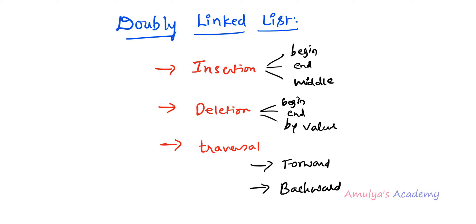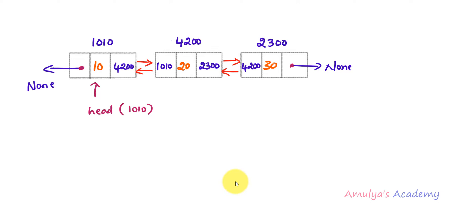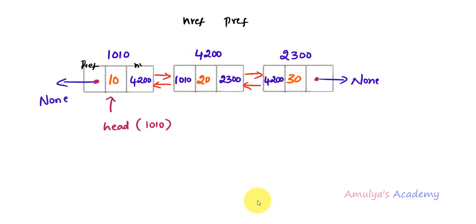Let's discuss the insertion operation in detail with diagrams. We have a doubly linked list with three nodes containing data 10, 20, and 30. For convenience, I will refer to the next node reference as nref and the previous node reference as pref. The first step in insertion is always to create the node. I'll create a node with a data field (for example, 100) and both links initially set to none.